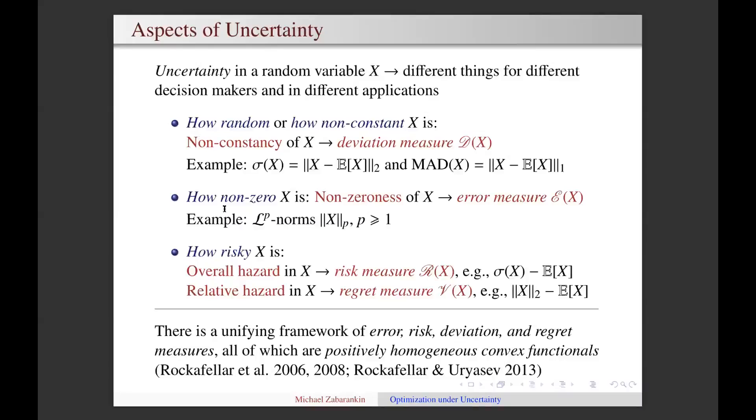Another decision maker, for example in regression analysis, may be concerned about non-zeroness of X, which can be measured by some error measure such as L2 norm. Yet in portfolio analysis, the question of interest is how risky a random variable X that represents a portfolio rate of return is. In this case, risk can be captured in the form of a risk or regret measure.